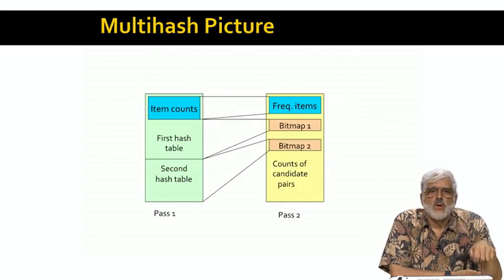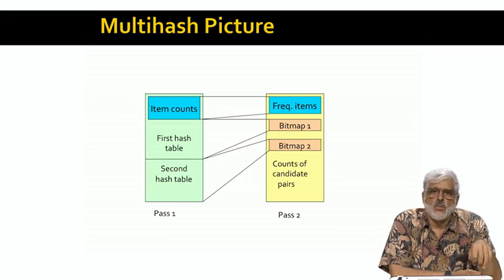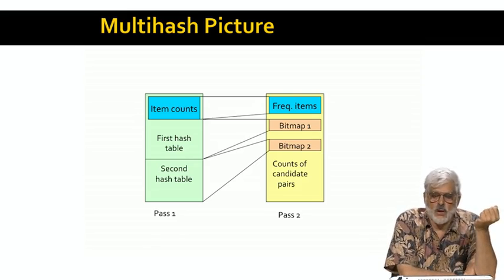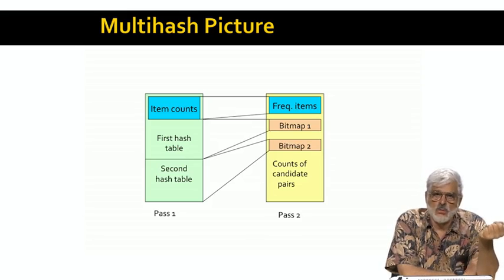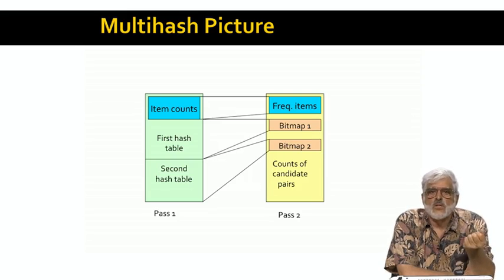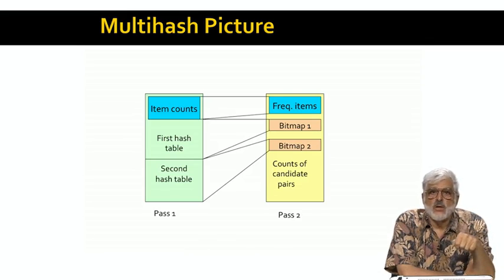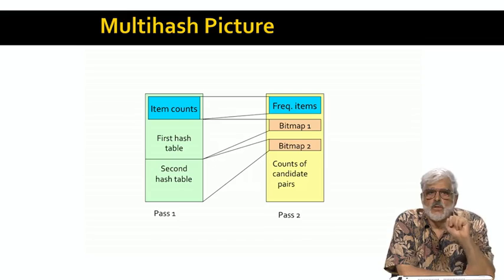The chances are very high that at least one hash function will send a non-frequent pair to an infrequent bucket. In that case, we get much of the benefit of five stages of multi-stage, but we use only two passes instead of six. Here's a picture of multi-hash using two hash tables on the first pass. On the second pass, item counts are summarized as a list of frequent items, and each hash table from the first pass is summarized by a bitmap. The total number of buckets is the same whether we use one hash table as in PCY or two or more. The requirement for a pair i,j to be a candidate is that both i and j are frequent items and, for each hash table, the pair must hash to a frequent bucket.